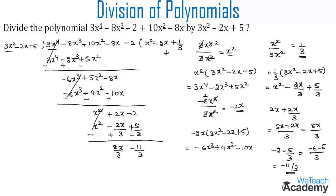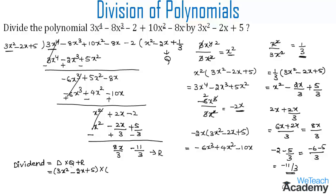So the quotient is x² minus 2x plus 1/3, and the remainder is 8x/3 minus 11/3. Now let us verify using the relation: dividend equals divisor times quotient plus remainder. The divisor is 3x² minus 2x plus 5, the quotient is x² minus 2x plus 1/3, and the remainder is 8x/3 minus 11/3.